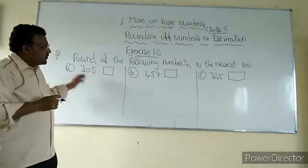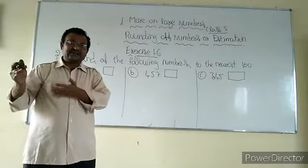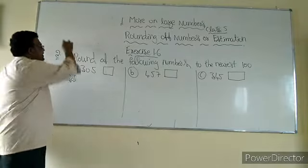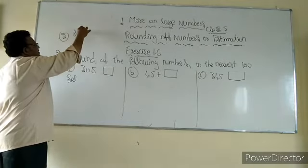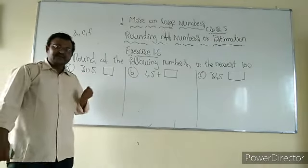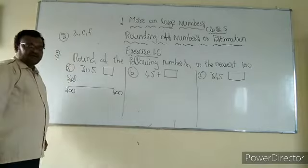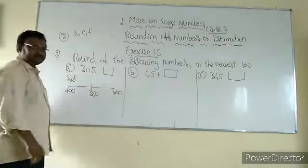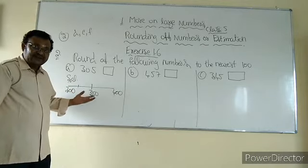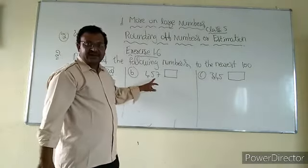The second main asks us to round up the following numbers to nearest hundreds. The hundreds are: 100, 200, 300, 400, 500, 600, 700, 800, 900. Here also A, B, C are explained, and D, E, F are left for homework. Coming to the solution: 305 is in between 300 and 400. The halfway is 350. 305 is less than 350, so it is in the less than halfway part, meaning we round down to 300.